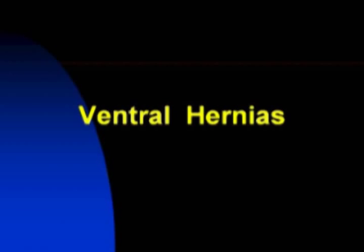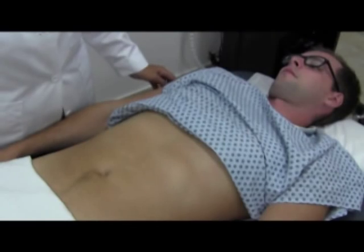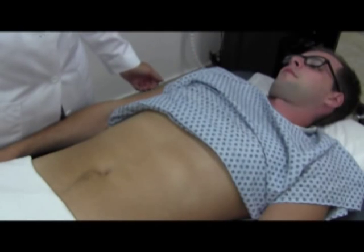Assessing ventral hernias. Ventral hernias are hernias in the abdominal wall. If you suspect but do not see an umbilical or incisional hernia, ask the patient to raise both head and shoulders off the table.